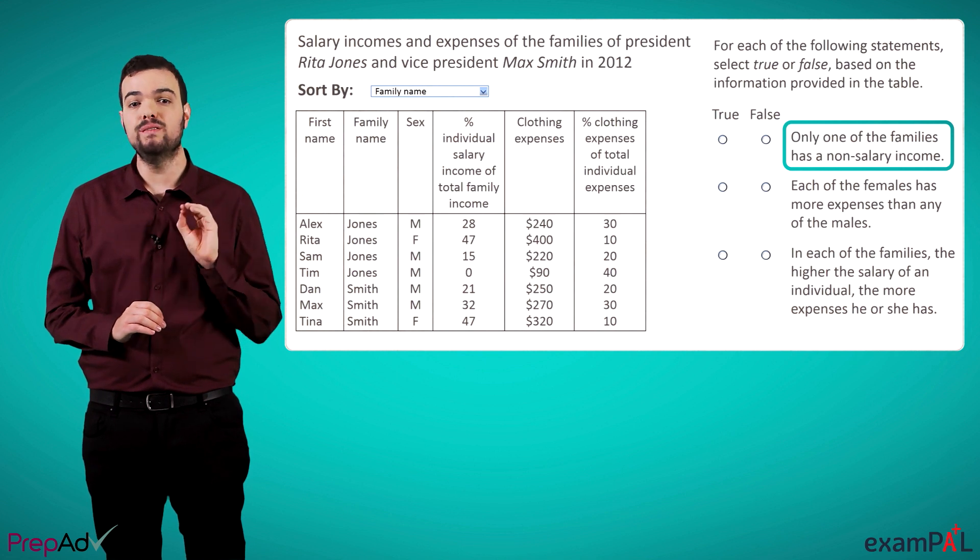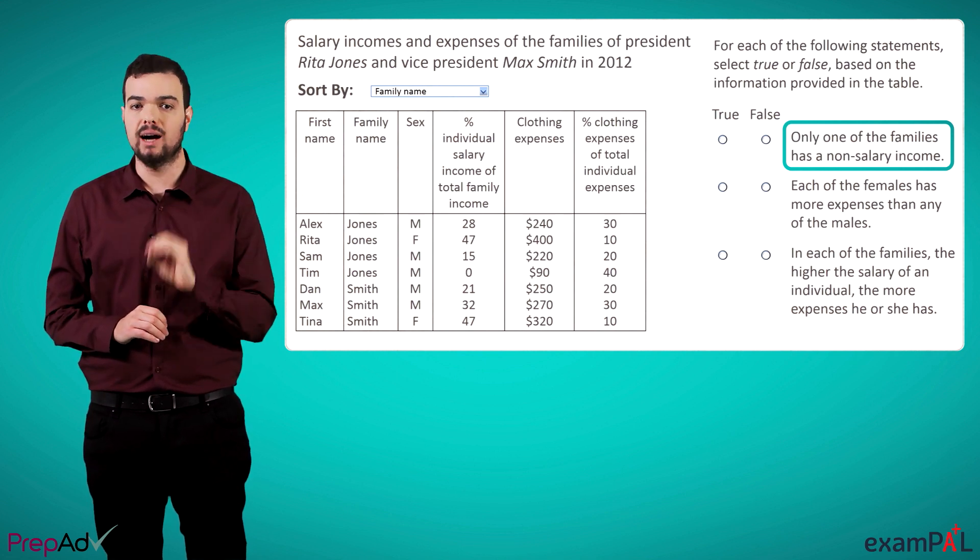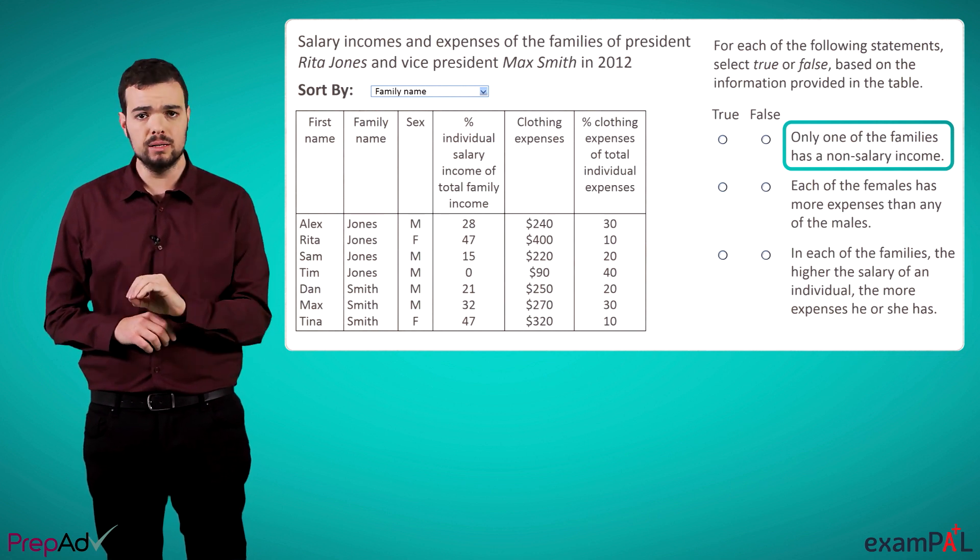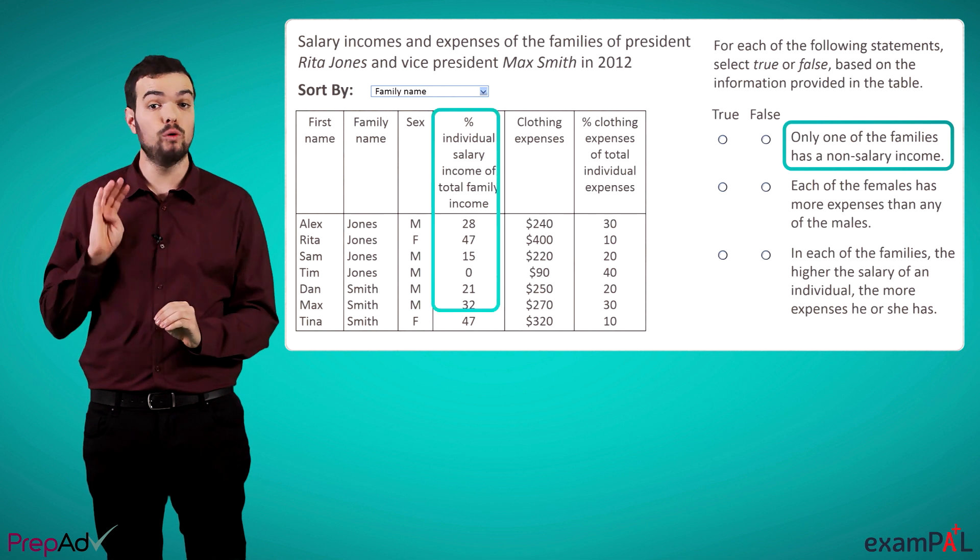Following this, we have to figure out which is the relevant column to find what we are looking for. Since we are asked about the relationship between income and salary, this is the fourth column.